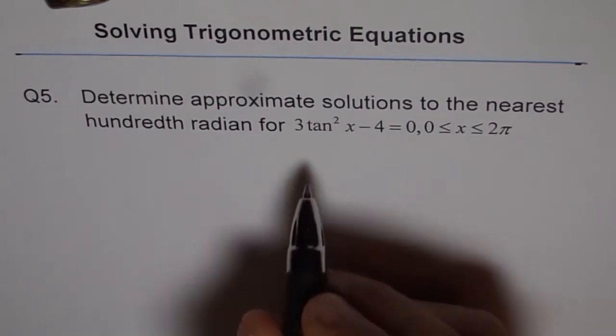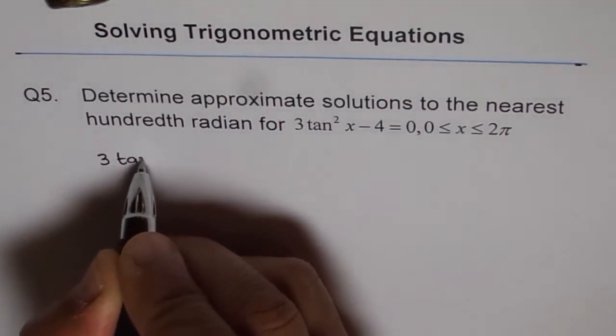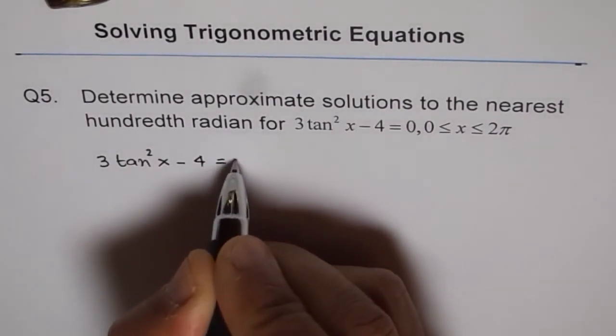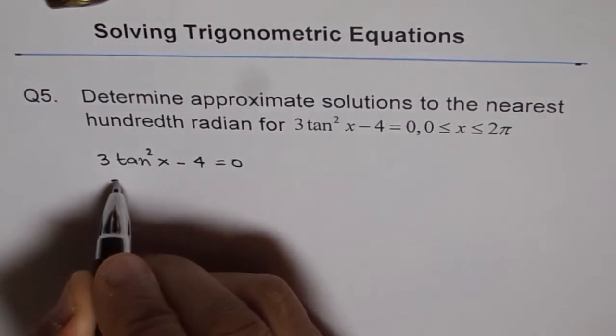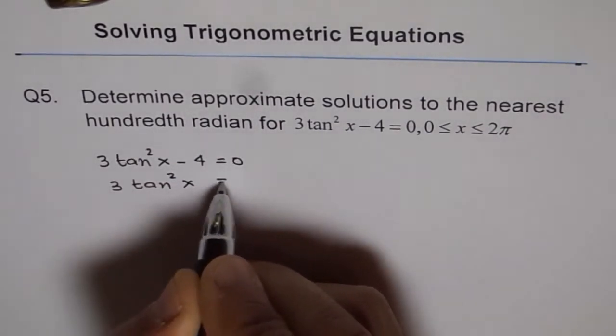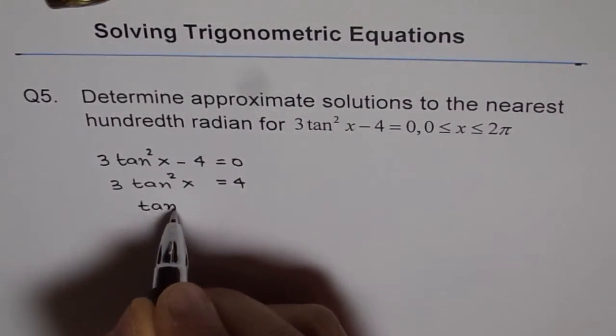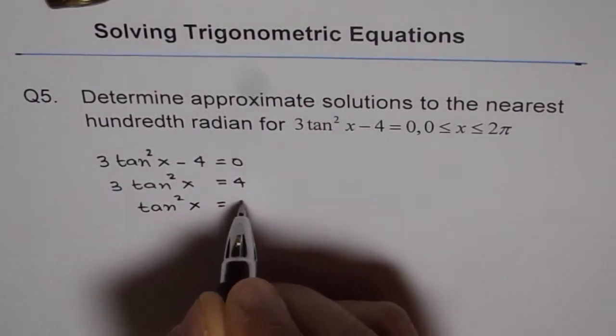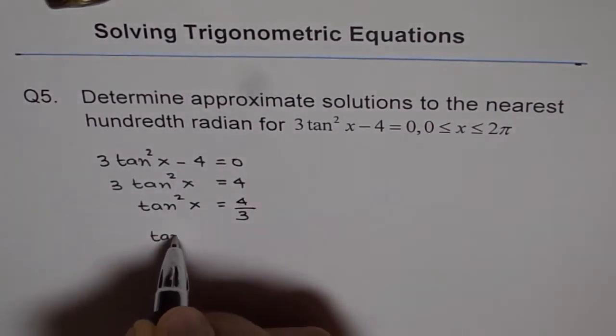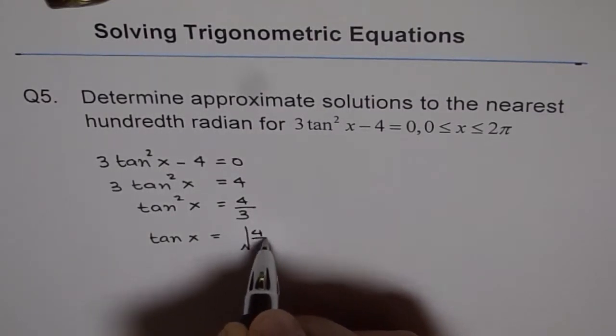Let's solve this equation: 3 tan squared x minus 4 equals 0. We can take 4 to the other side, we get 3 tan squared x equals 4, and then we can write this as tan squared x equals 4 over 3, and therefore tan x equals square root of 4 over 3.